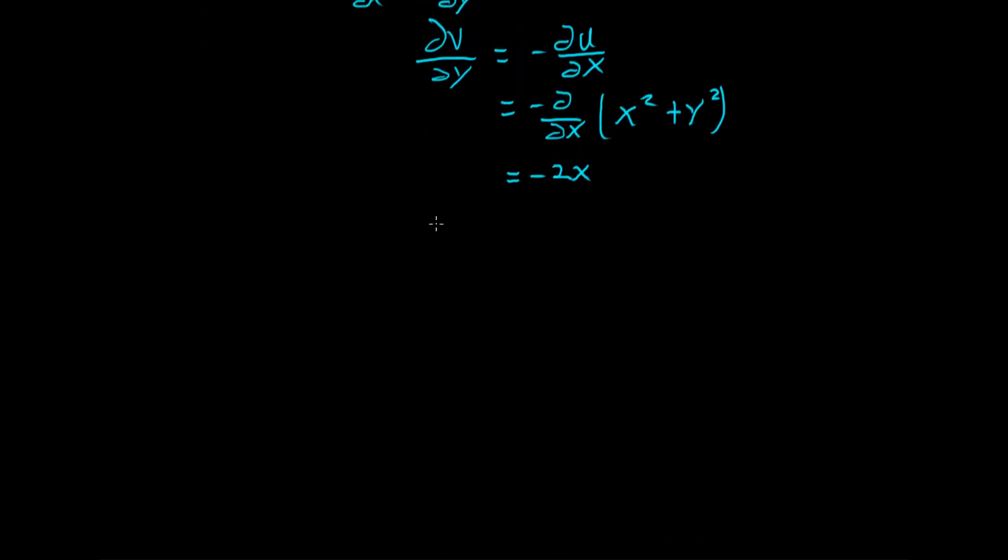So now we just have some math to do. dv by dy is equal to minus 2x. This is now a separable differential equation. So we can multiply this up as dv on the left hand side minus 2x dy on the right hand side. We can integrate both sides. And we'll have v is equal to the integral of this with respect to y is just minus 2xy.